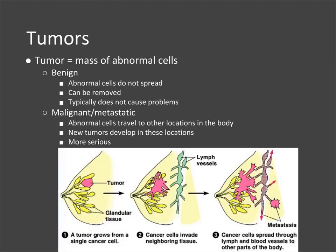Cancer is uncontrolled cell growth where cells go through mitosis even when they shouldn't. This can lead to the formation of tumors — a mass of abnormal cells. Not all tumors are cancerous in the sense that not all of them will spread around the body.